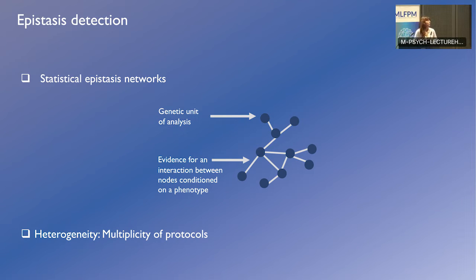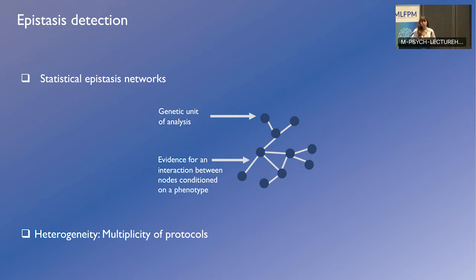The last concept I need to introduce to answer the main question — how could we better understand the genetic architecture of complex diseases — is the concept of epistasis. Epistasis occurs when the effect of a combination of genes is not due to their independent effects. In epistasis networks, nodes are genetic units of analysis such as genes, and there is an edge between two nodes if there is an effect of their combination on the phenotype. Epistasis detection is quite complex, especially because it involves many statistical tests, so there are many methods developed for it, but they all give rise to different epistasis networks.